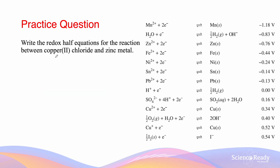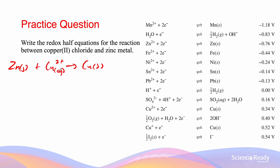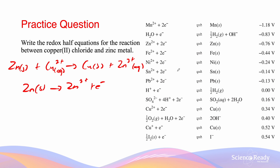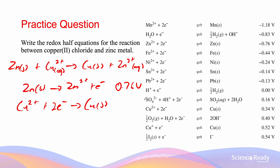This question asks about the reaction between copper chloride and zinc metal. In this case, the zinc metal is going to be oxidized while copper is going to be reduced. The oxidation of zinc has an electrical potential which is the negative of −0.76 V, giving +0.76 V. The reduction of Cu²⁺ is +0.34 V. When we add these values together, we get +1.10 V. Because this is positive, this reaction will occur spontaneously.